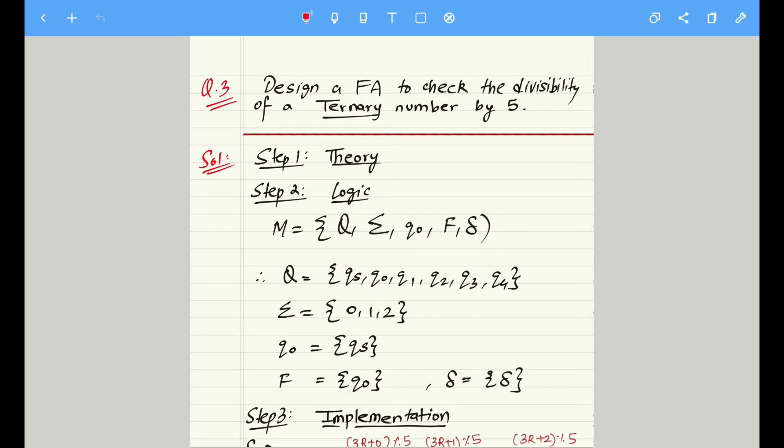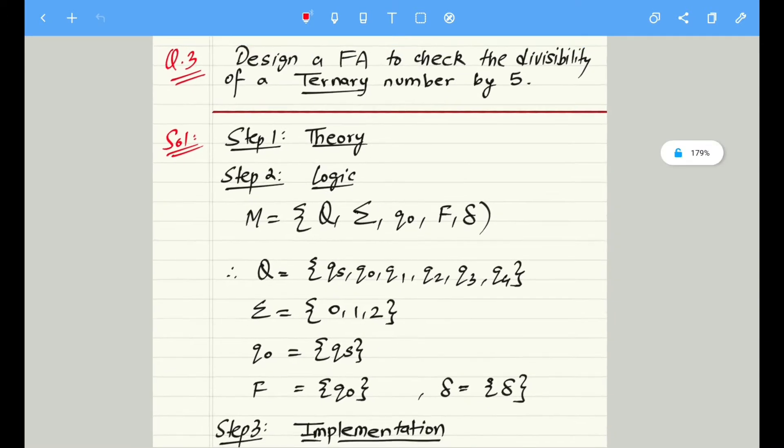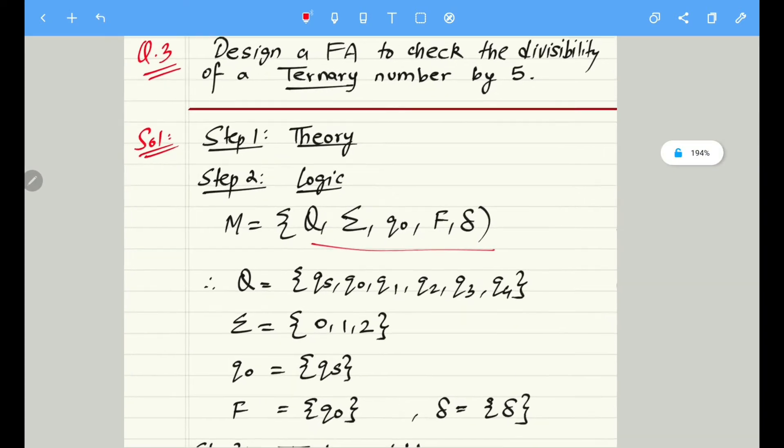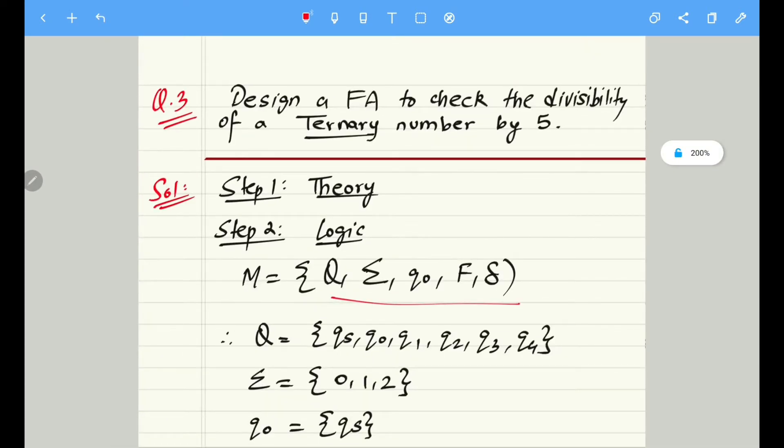The only thing that differs is in terms of tuples or the number of inputs. Let me start this problem. The problem is like this: design a finite automata to check the divisibility of a ternary number by 5.